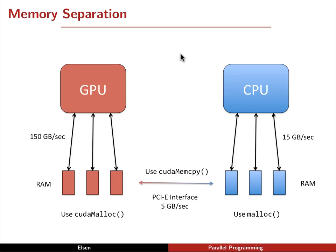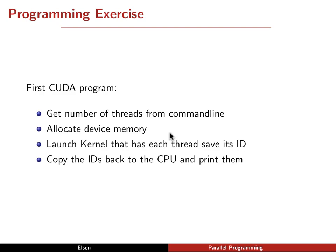So now that we have these two basic ideas, the concept of tying the threads to the amount of data and the idea of memory separation, we can think about writing our first trivial CUDA program. What do we want this program to do? Well, let's just get the number of threads we want to launch from the command line. We'll allocate some device memory. We'll launch a kernel. And all this kernel will do is have each thread save its ID to memory, and then we'll copy those IDs back to the CPU and print them out.